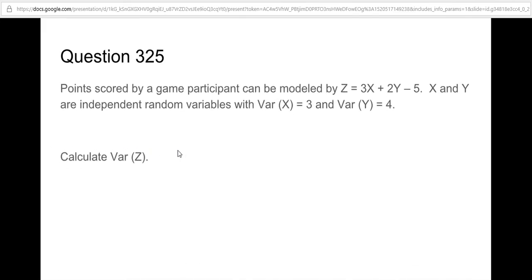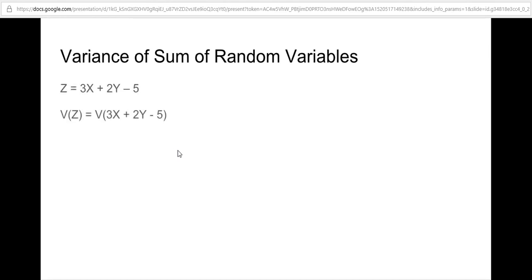Now for question 325 — this one is pretty straightforward once you've done the previous one. For the variance of Z = 3x + 2y − 5, we split the variance into three pieces. Recall that with the variance of a sum of random variables, you sum the variance of each component: Var(3x) + Var(2y) + Var(5).